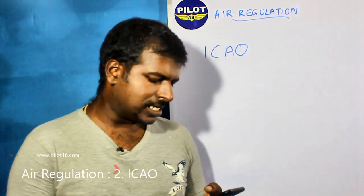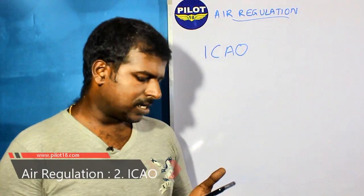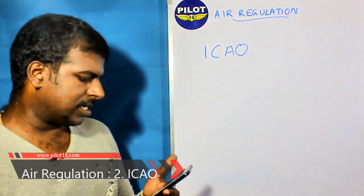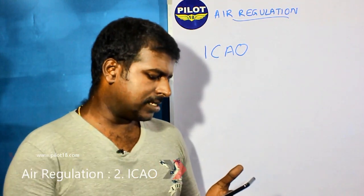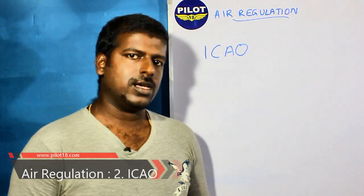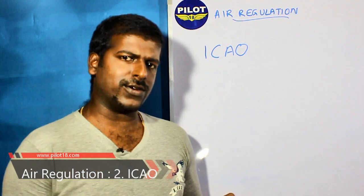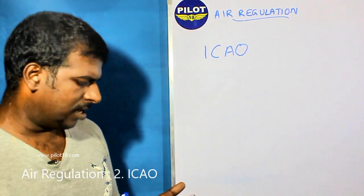ICAO has 7 regional offices in Asia-Pacific, Middle East, Western and Central Africa, South America, North America, East and Southern Africa, and Europe and North Atlantic in Paris. Remember the number of regional offices is 7, and the headquarters is at Montreal.